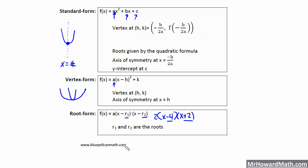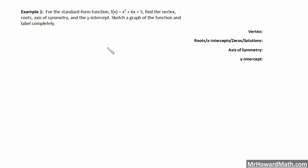Let's look at some examples. Example one: for the standard form function f(x) equals X squared plus 6X plus 5, find the vertex, the roots, the axis of symmetry, and the Y-intercept, then sketch a graph and label it completely. Note that roots, X-intercepts, zeros, and solutions are all synonymous — they all mean where does it cross the X-axis. We have a standard form here, so we'll label our values: A equals 1, B equals 6, and C equals 5.